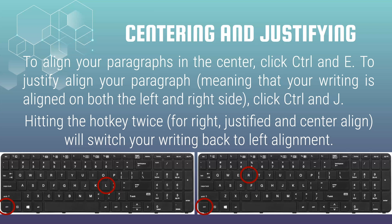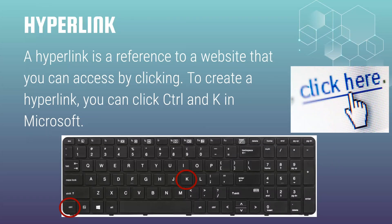Hitting the hotkey twice for right, justify, center, and align will switch your writing back to left alignment. A hyperlink is a link to a website. For example, google.com — this is a hyperlink that we use every day to search the internet. If you want to create a new hyperlink, you're going to select control and K in Microsoft Word.